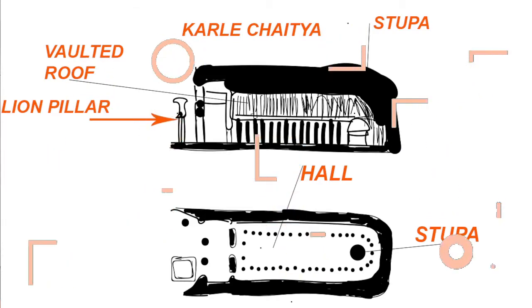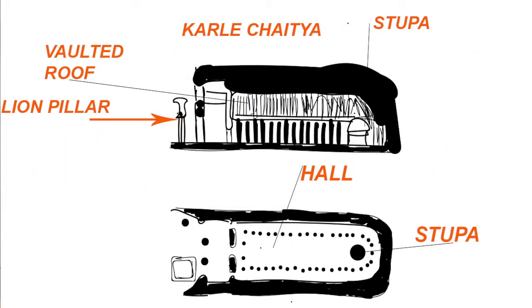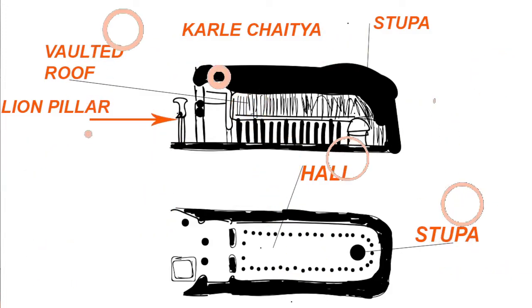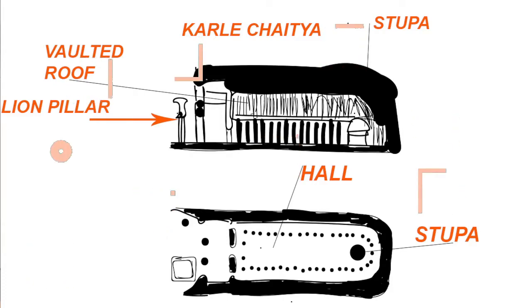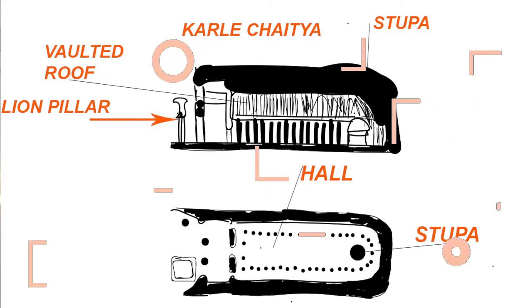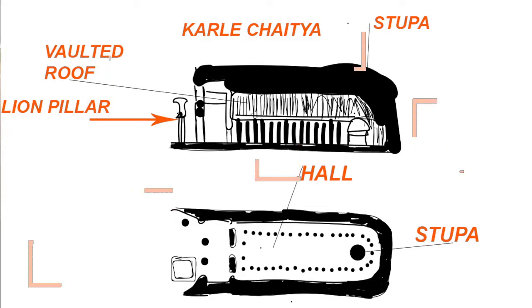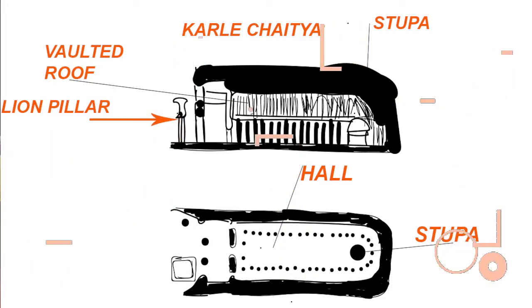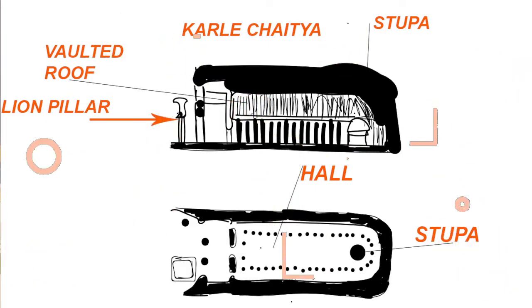This is the Karla Chaitya — I am showing you the plan at the bottom and the section at the top. The vaulted roof is shown in the section — a vaulted roof is formed when an arch continues in a single line. The Karla Chaitya has a lion pillar in the front, which is our national emblem — the four-faced lion, Ashoka's stambha. So this Chaitya has Ashoka's stambha in front of it.